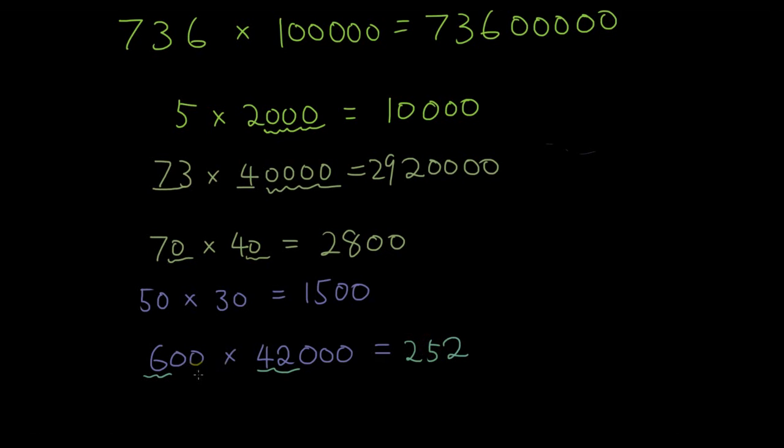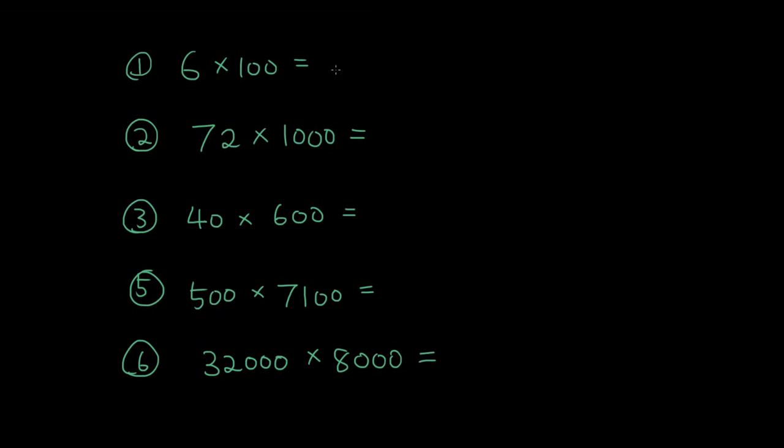Then you're going to do 1, 2, 3, 4, 5. Five zeros. There is your answer. I hope you guys understand now the shortcut method. So I want you guys to now have a go at these questions. And once you have done them, come back to see the answer.